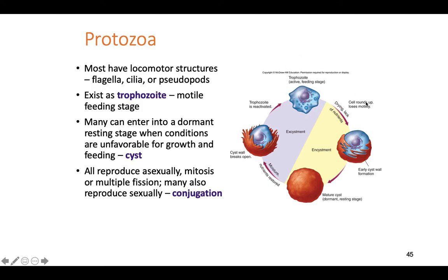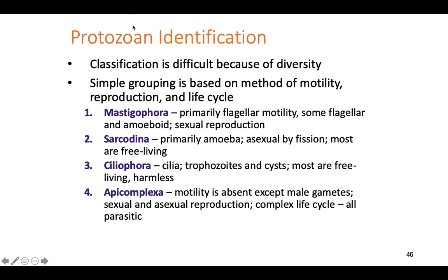Most protozoans reproduce asexually, and almost all are capable of sexual reproduction as well. They don't necessarily need to do it unless the environment is bad. You classify protists based on how they move around, how they reproduce, their overall life cycle — how they live, if an insect is involved, if they need a host, and things like that.